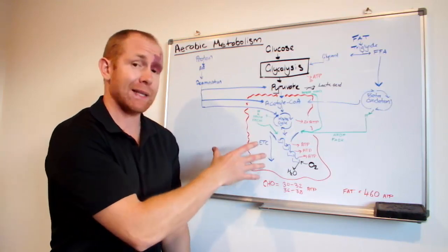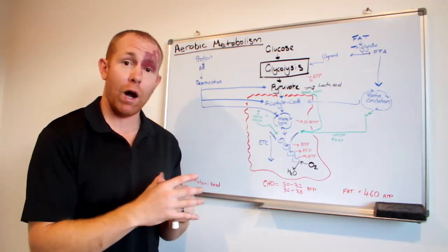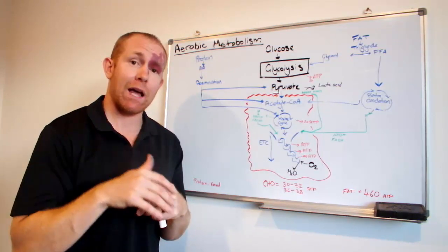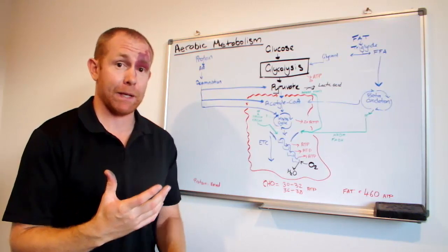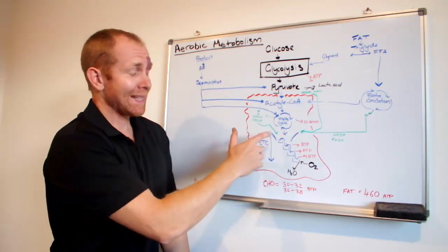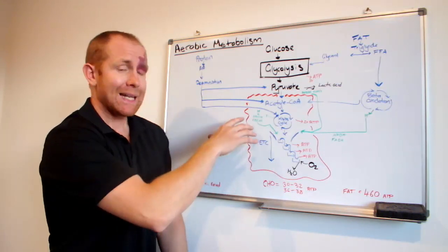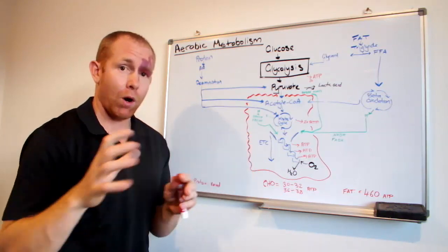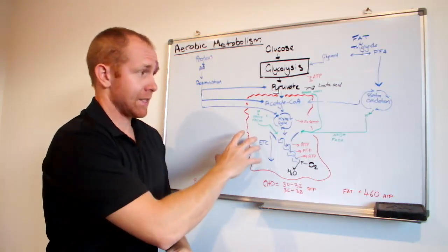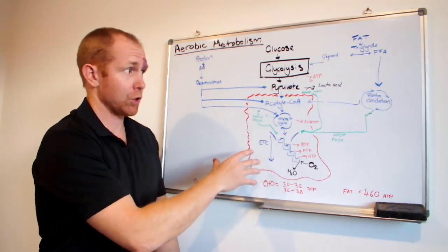Same thing sort of happens in the electron transport chain. There's a high concentration of hydrogen ions. And as they flow down through the electron transport chain, they produce ATP. The way that they get to the electron transport chain is kind of important as well. NAD and FAD are two transporters that will pick up hydrogen ions from around the cell and bring them into the electron transport chain.